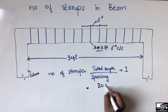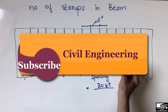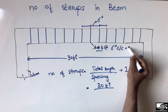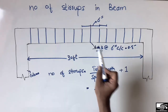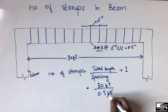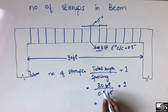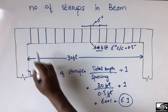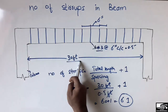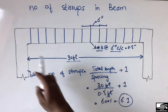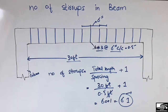The total length of the beam is 30 feet. The spacing between each stirrup is six inches, which we convert to feet: six inches equals 0.5 feet. So: 30 divided by 0.5 equals 60, plus one gives us 61. Therefore, 61 stirrups are used in this beam with a length of 30 feet and stirrup spacing of six inches center to center.